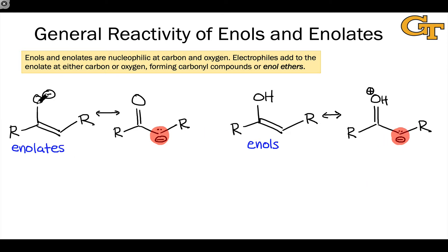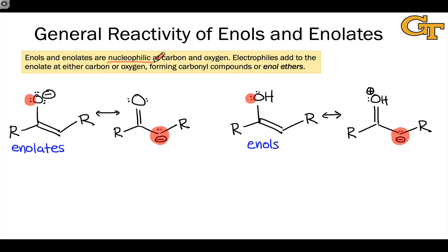We should also notice that the oxygens in these intermediates have non-bonding lone pairs. These lone pairs make the oxygen atom nucleophilic in and of itself in both the enolate and, to a lesser extent, the enol. So these intermediates present us with an interesting situation where the molecules are nucleophilic or Lewis basic at both carbon and oxygen.